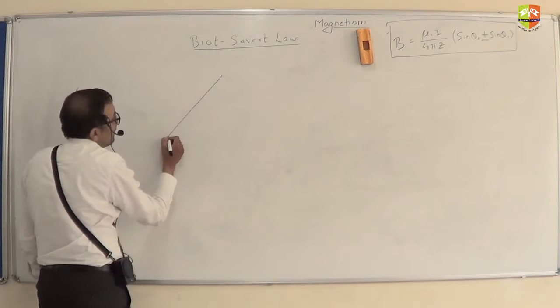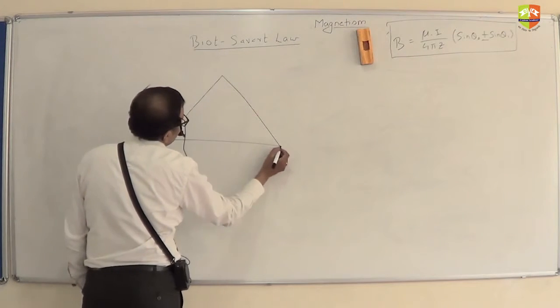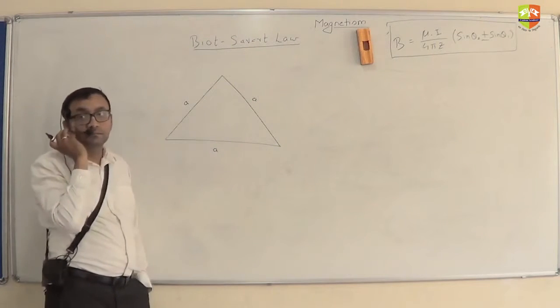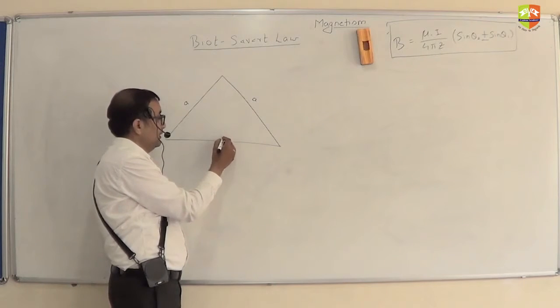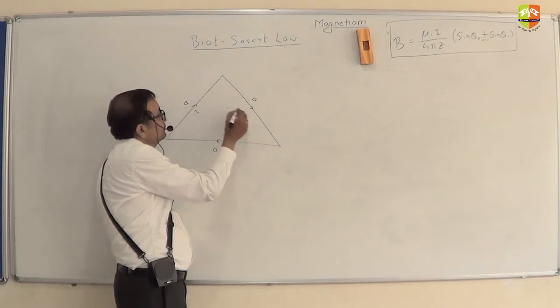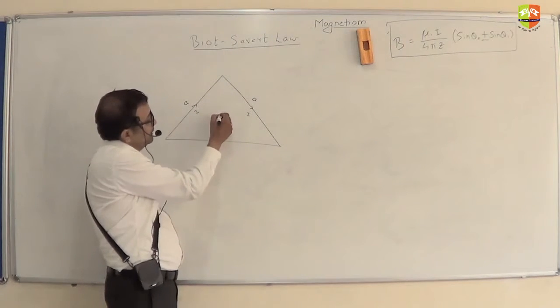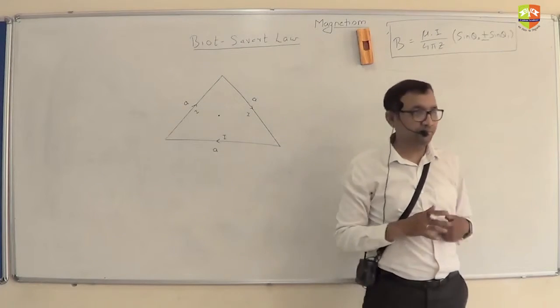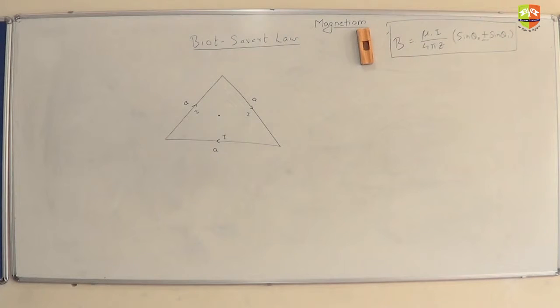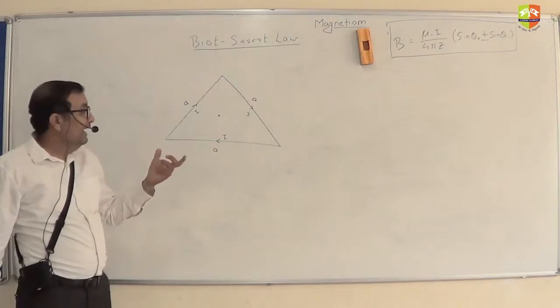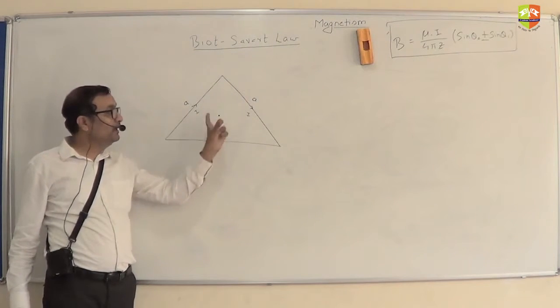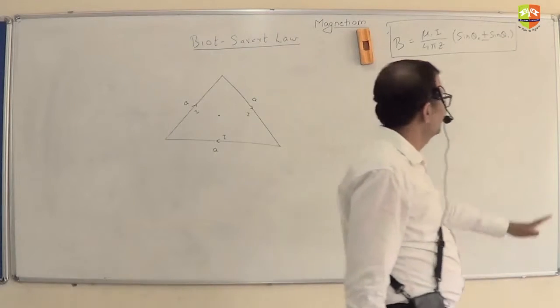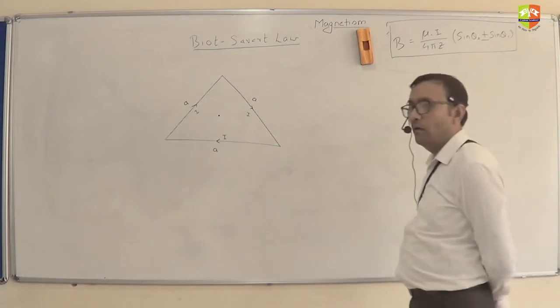I'll draw an equilateral triangle. Each side is A. The current flowing through the loop is I. You have to find magnetic field at the center of the triangle, at the centroid of the triangle. How do you go about solving this? Can I say that this triangle is made of three line segments and I find magnetic field due to one line segment and add them? Do it. It's a direct application of the formula.